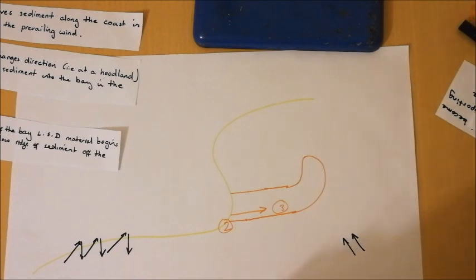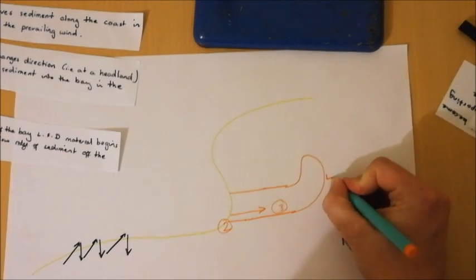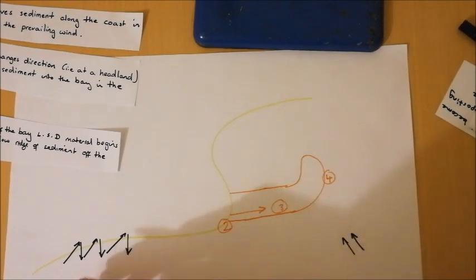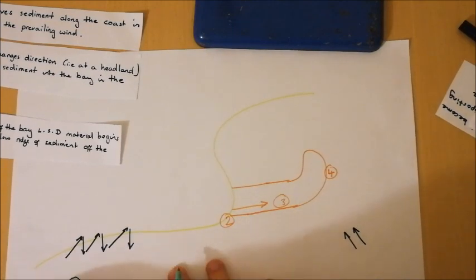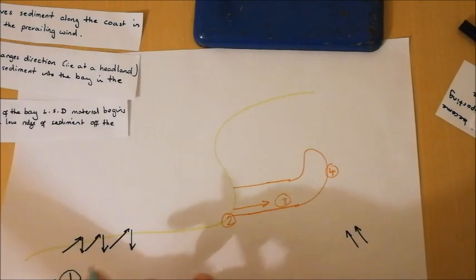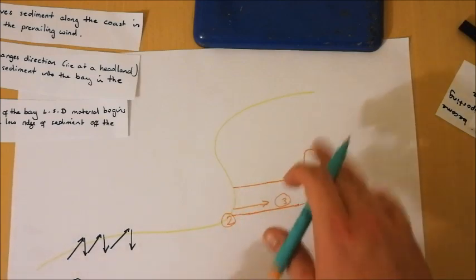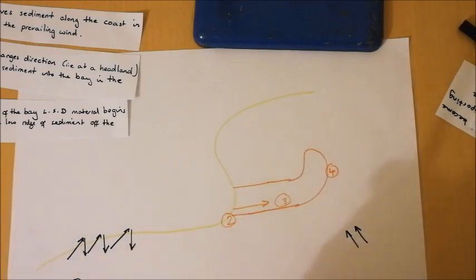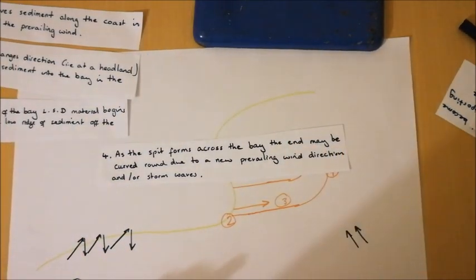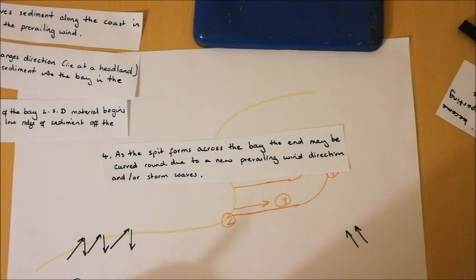So again, what we can do is we can number that, we can put a four there, making sure I'm getting that sequence. The examiner is going to be left in no doubt that I want the first statement, number one, from down here, two, three, four. And that's the order that I want them read in. So what we can put is, as the spit forms across the bay, the end may be curved around due to a new prevailing wind direction and or storm waves. Particularly if storms come in, they're going to have a significant impact, causing the end of that spit to curve inland.